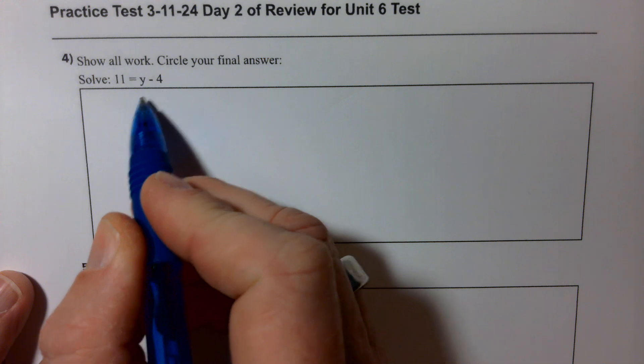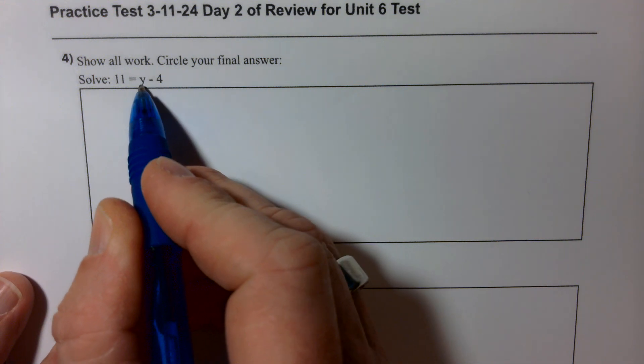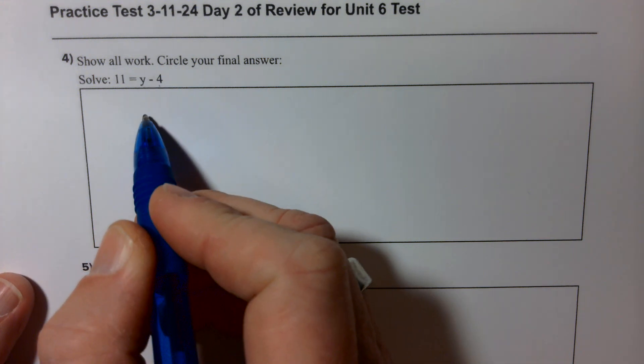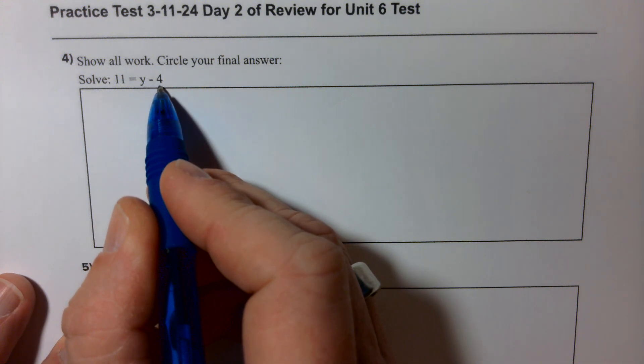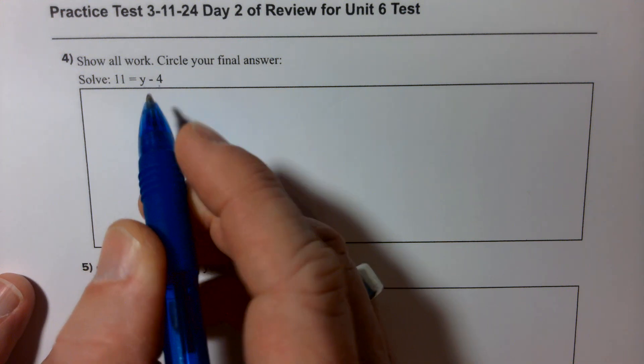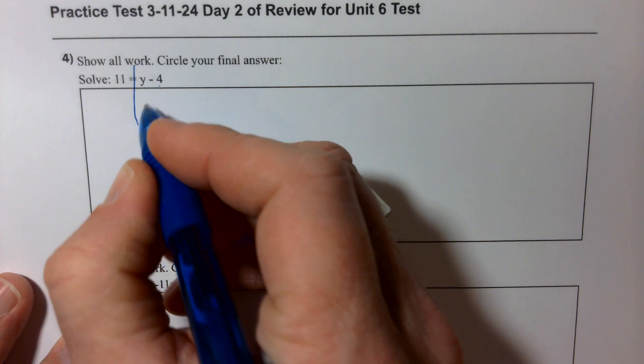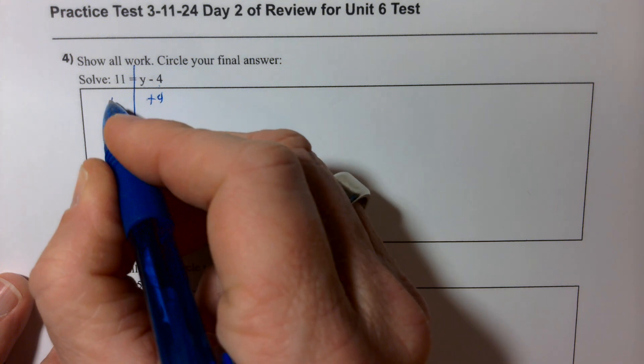So this one-step equation, I look at the variable side and I say what's happening to the variable side that I have to undo to get the variable alone. So currently I'm subtracting 4 from the y side. So I'm going to add 4 to both sides. Add 4, add 4.